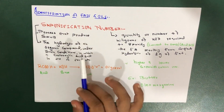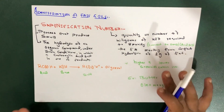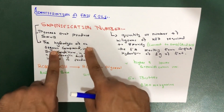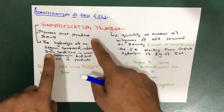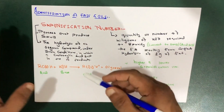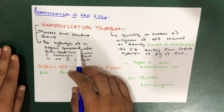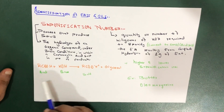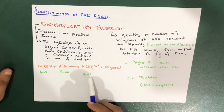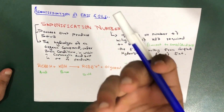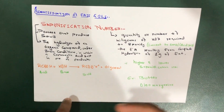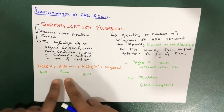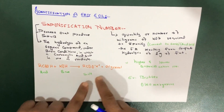Saponification is actually a process that produces soap. How is soap produced? Soap is produced when an acid and a base react together and produce a salt. When acid and base react together they produce a salt and a byproduct.